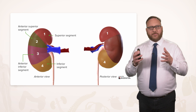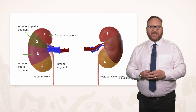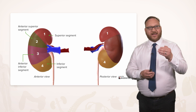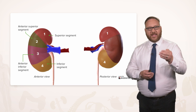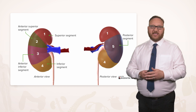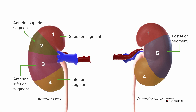On the posterior aspect, where we saw an anterior superior and an anterior inferior, we have a posterior segment. That's where the kidney has been separated in half down the coronal plane, giving both anterior and posterior segments in that division.